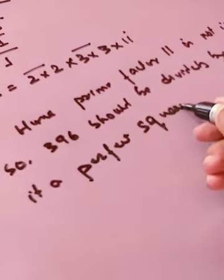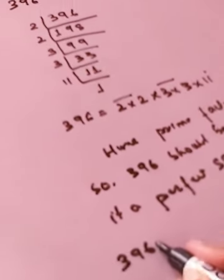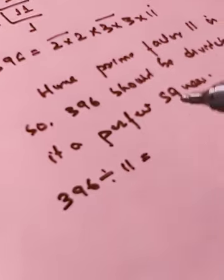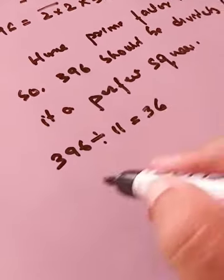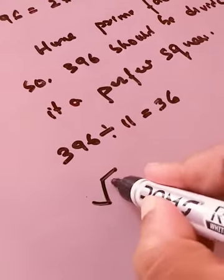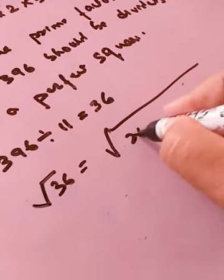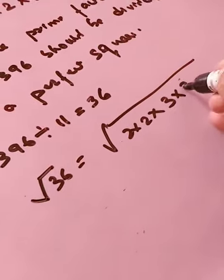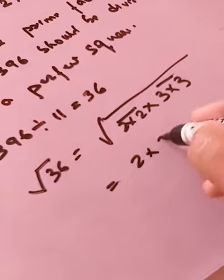So now what we will do, we will divide, that is 396 divided by 11, so what will be the answer, 11 3s are 33, again 36 is coming. So we know that 36 is what, 2×2×3×3, so 2×3, so answer is 6.